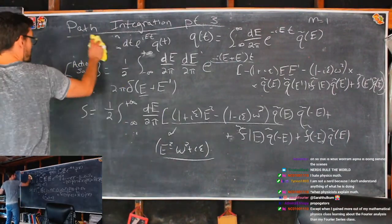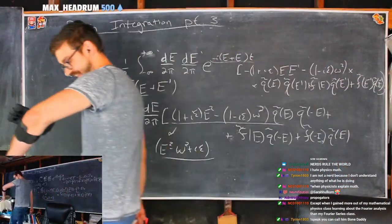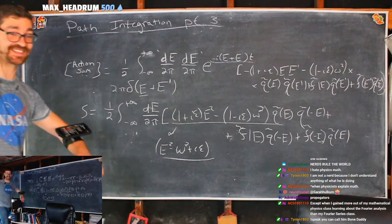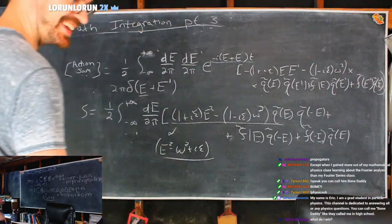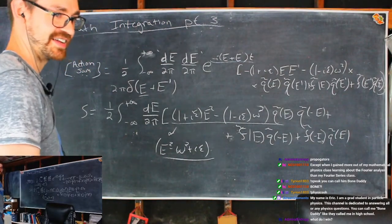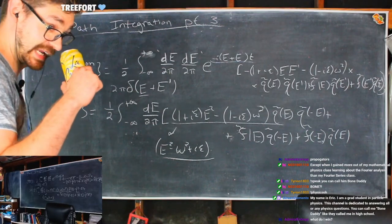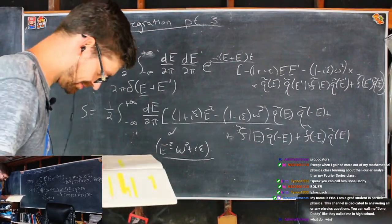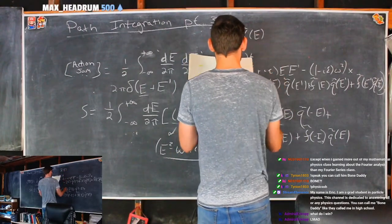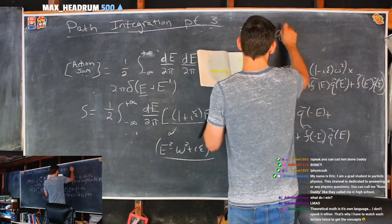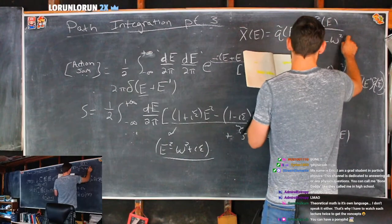Now we can do a U-substitution — that integral trick from calculus. We define X-tilde(E) equal to Q-tilde(E) plus F-tilde(E) divided by E squared minus omega squared plus i-epsilon. The integral over all Q's equals the integral over all X's because the added term is a constant with respect to Q.